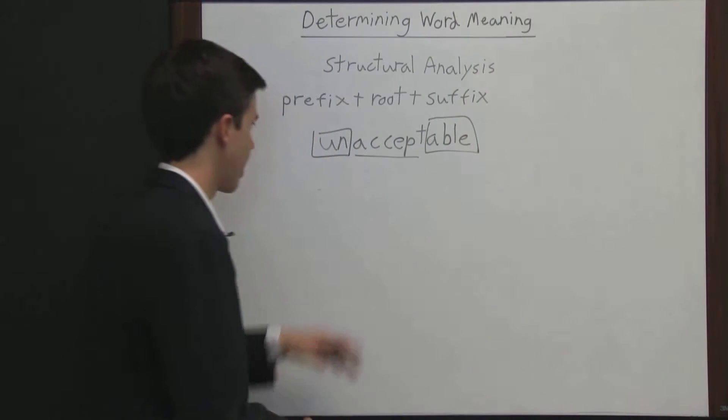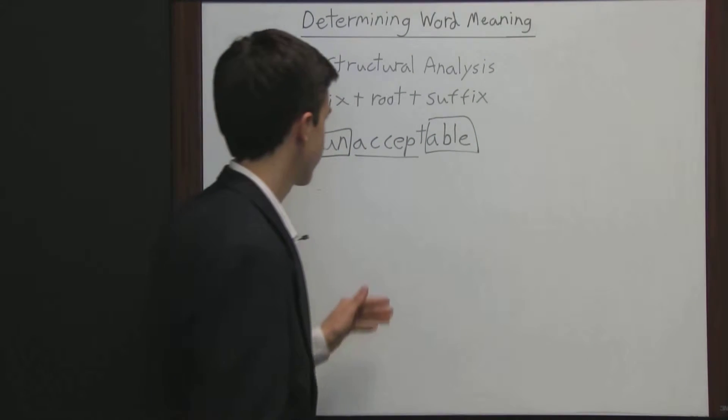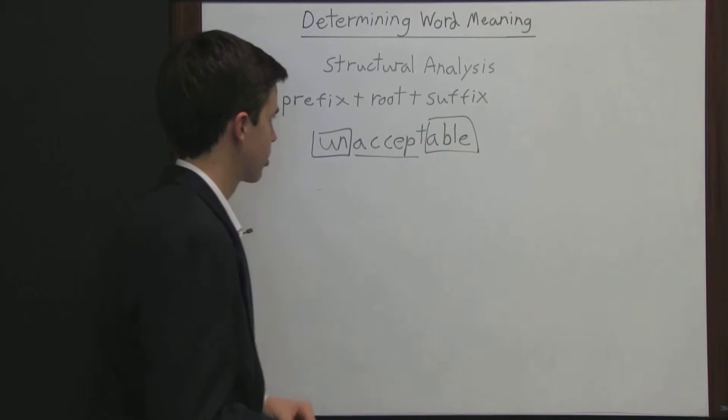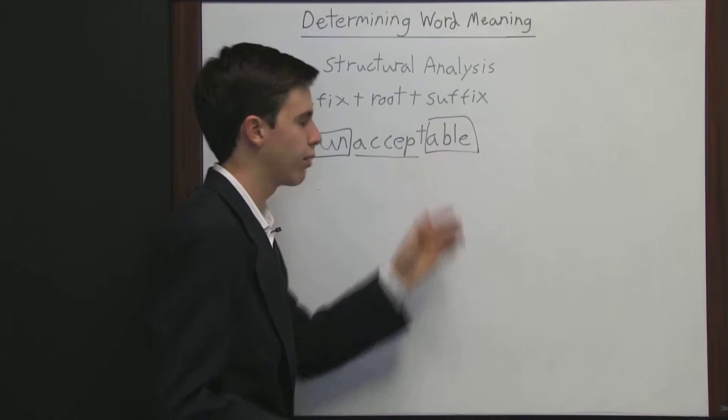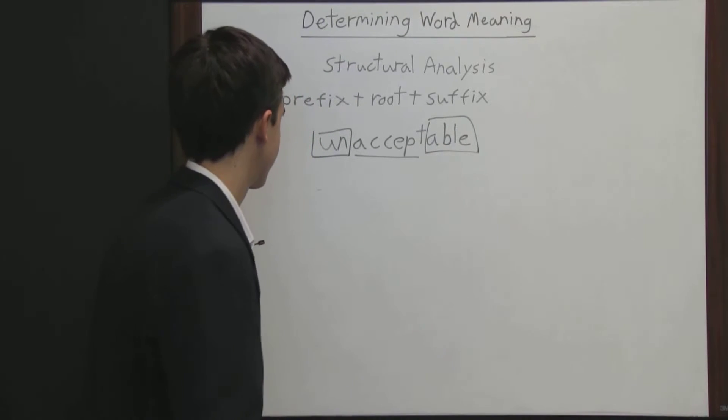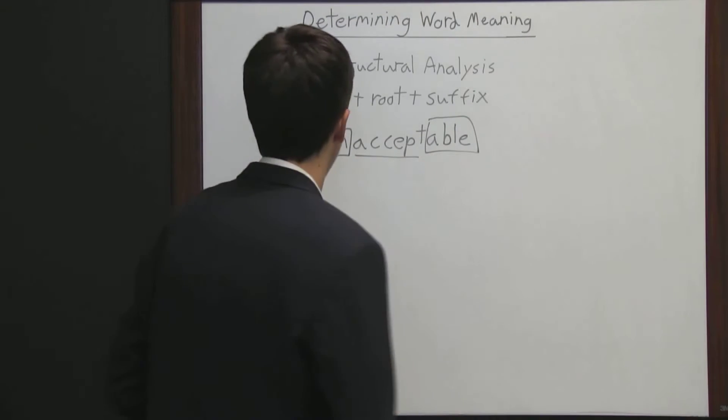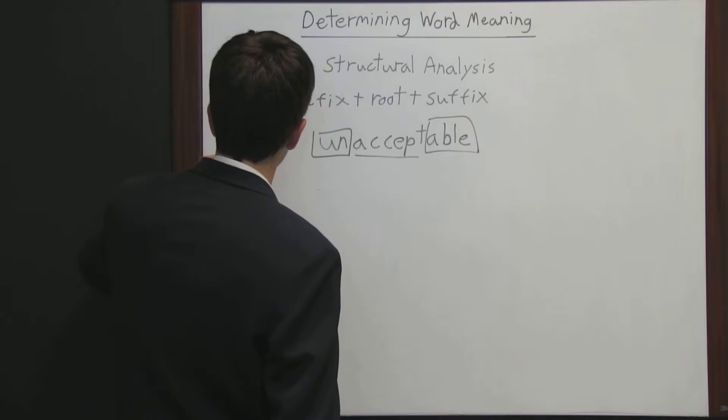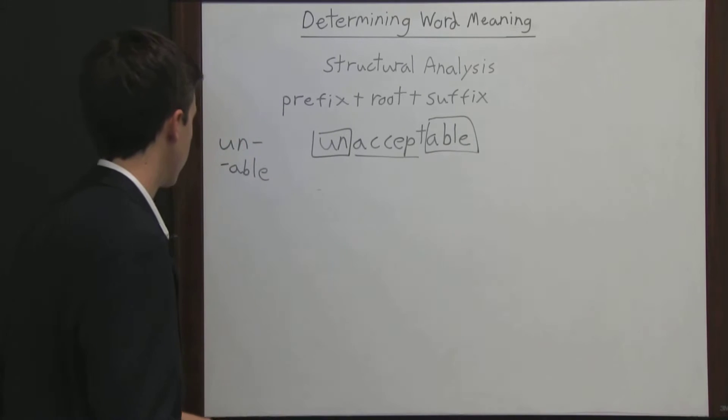The prefix is always going to come before the root word, and the suffix is always going to come after the root word. Now notice I said the root word is the word that can stand alone. I understand that able can also stand alone and is a word, but in this case it's a suffix. So if you saw un or able written by themselves, you would see it written like this. That's because the dash represents the word.